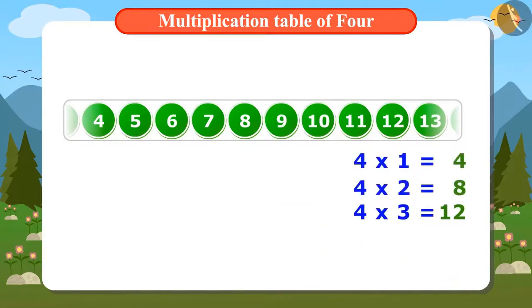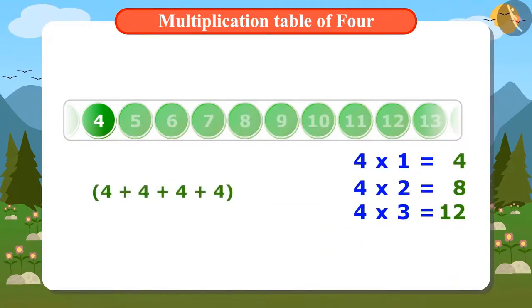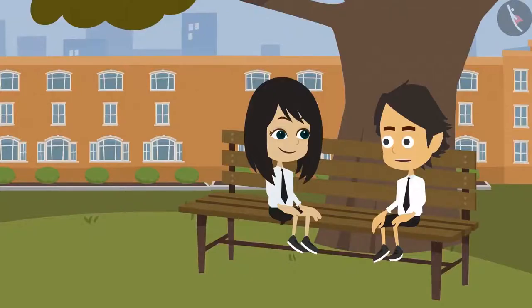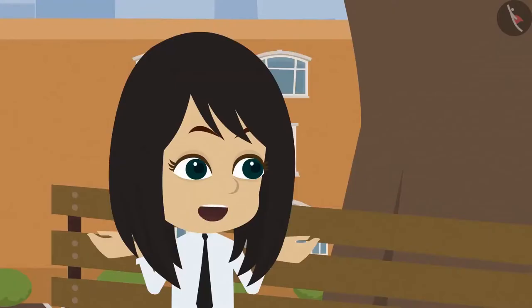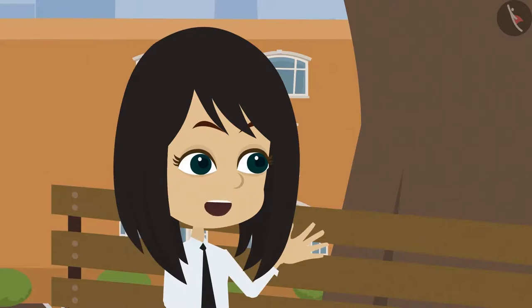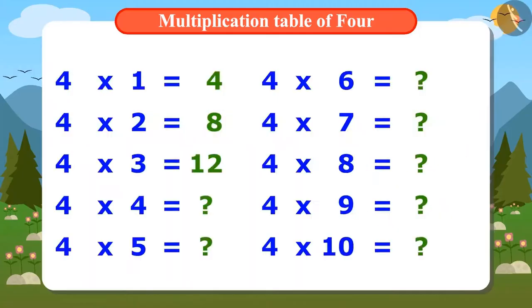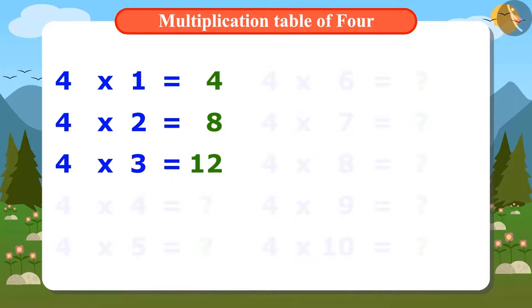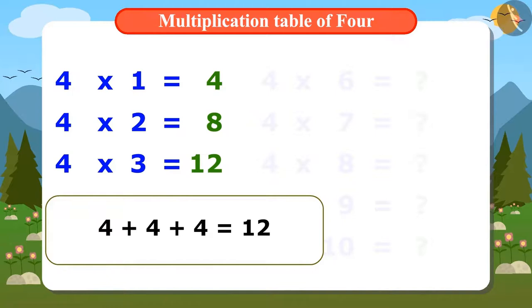Now to find out the next number, we will add 4 four times. Wait Neha, I don't think we need to add 4 four times. Then how do we find out what 4 times 4 is? Look, to find out 4 times 3, we have added 4 three times, whose answer is 12. Now by adding 4 to 12, we can find out how much do we get if we add 4 four times.